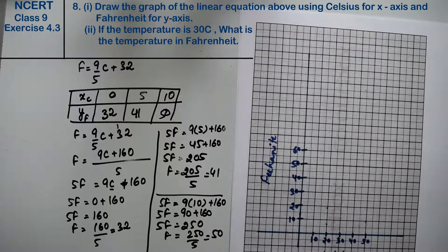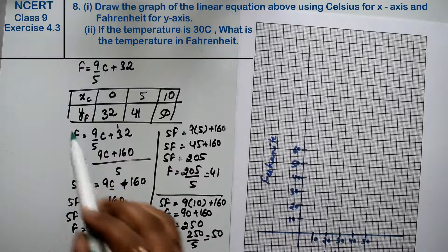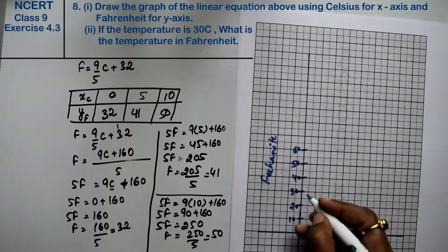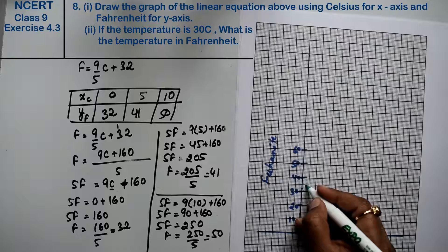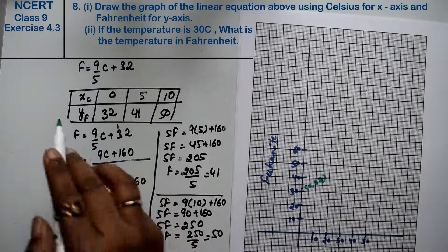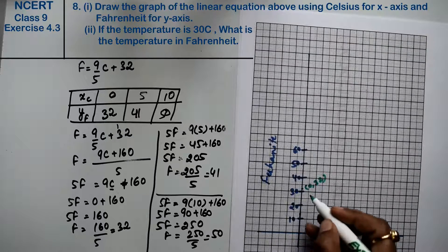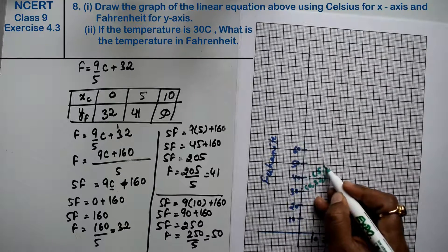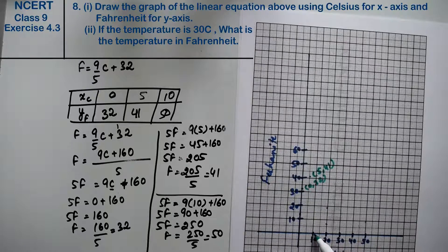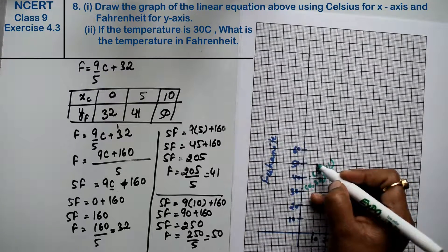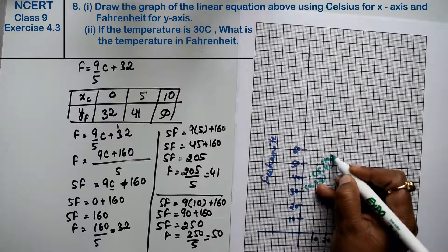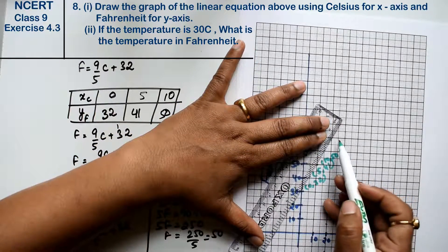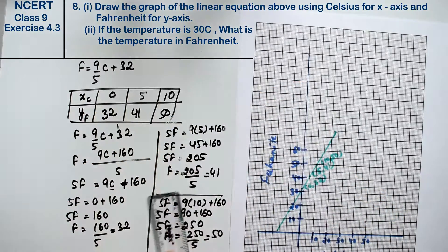Now let's see how the plotting will be. If Celsius is 0, then Fahrenheit is 32. If x is 0, then y is 32, this is the point 0 and 32. If x is 5, then y is 41. And 10 and 50. Now join them. This is the answer.